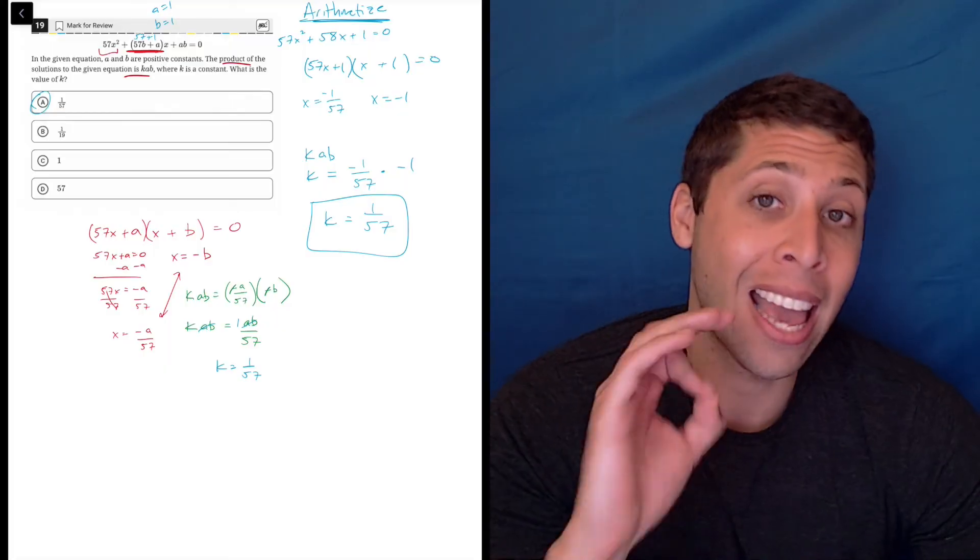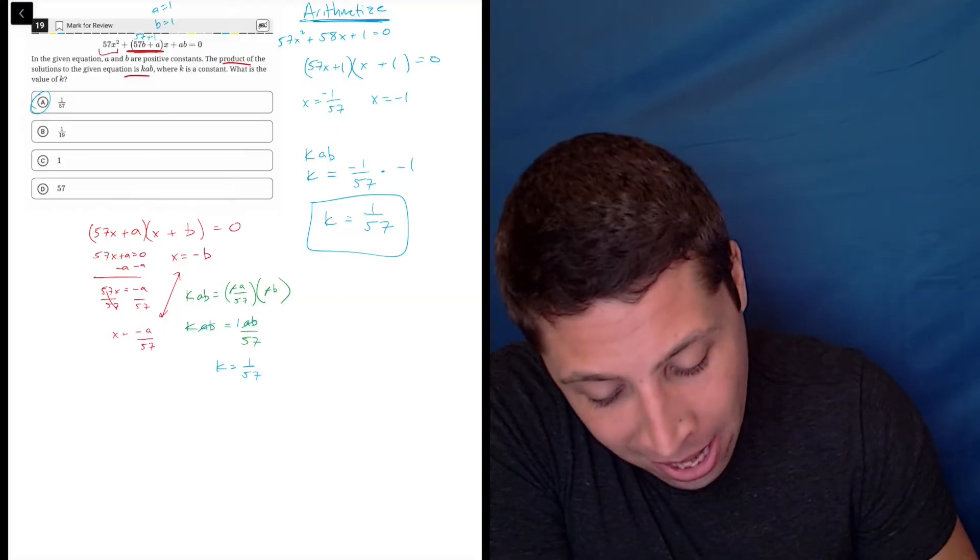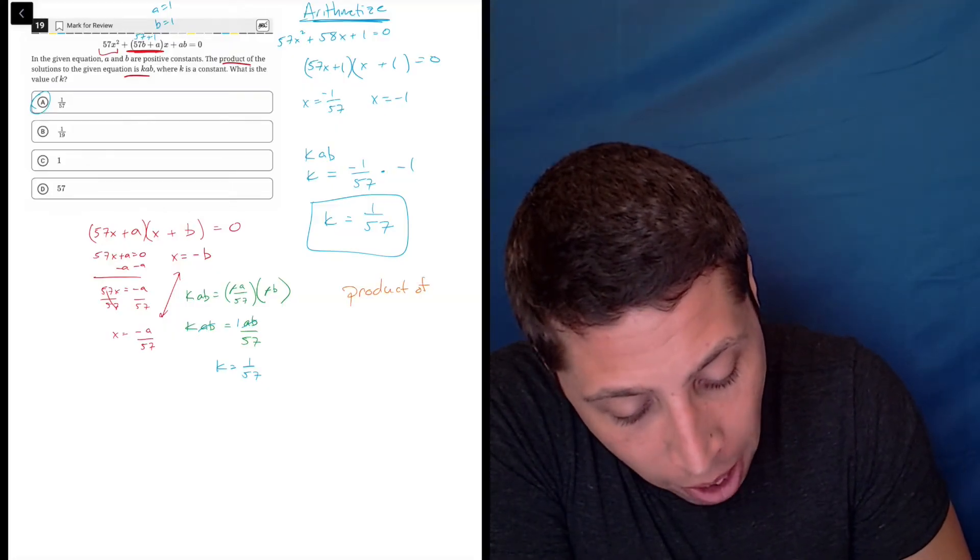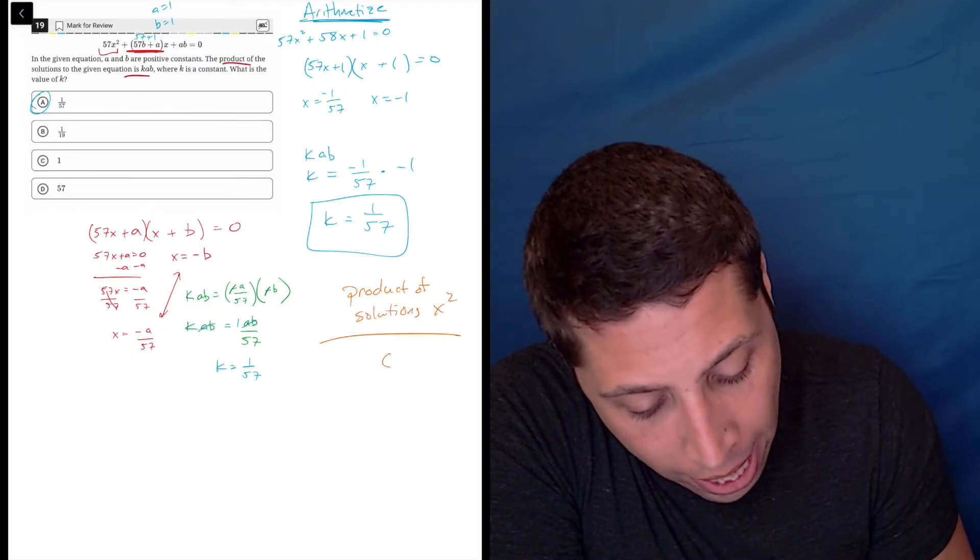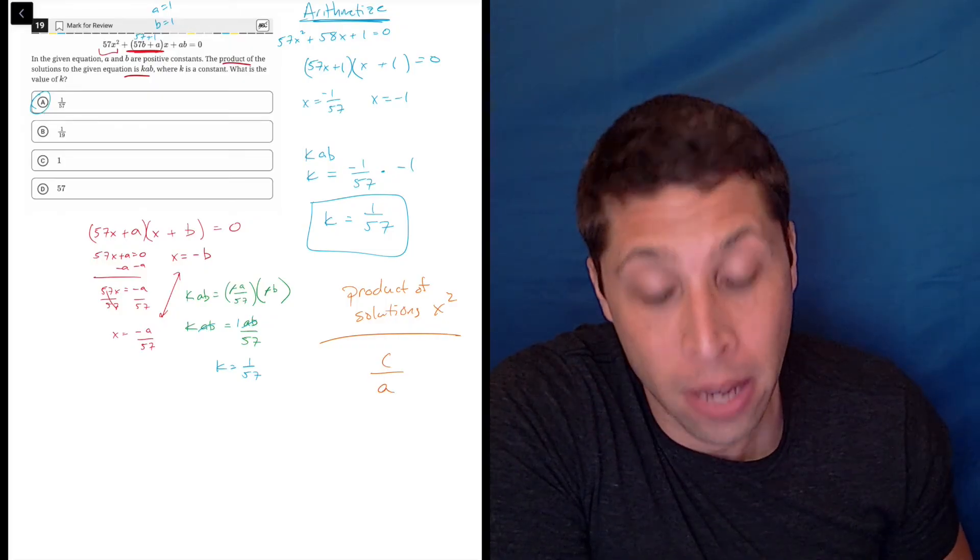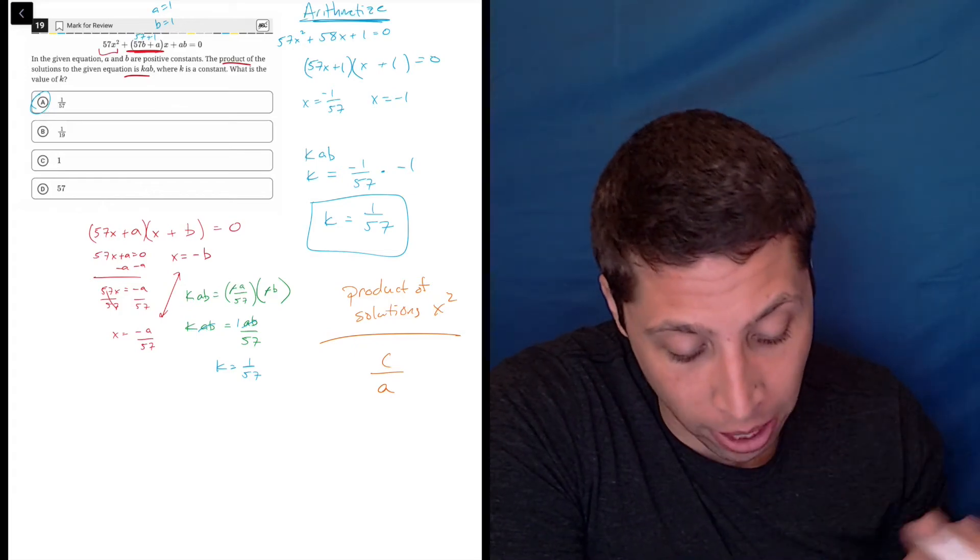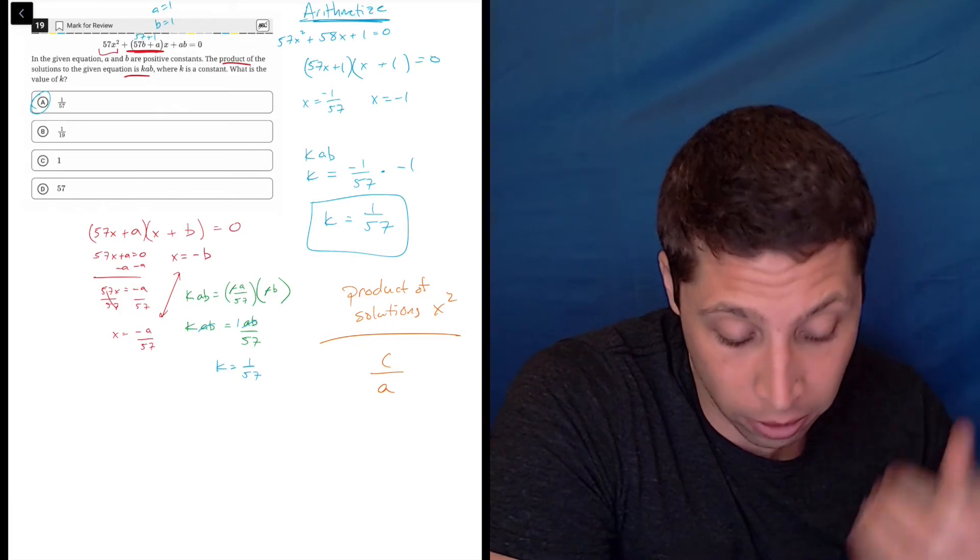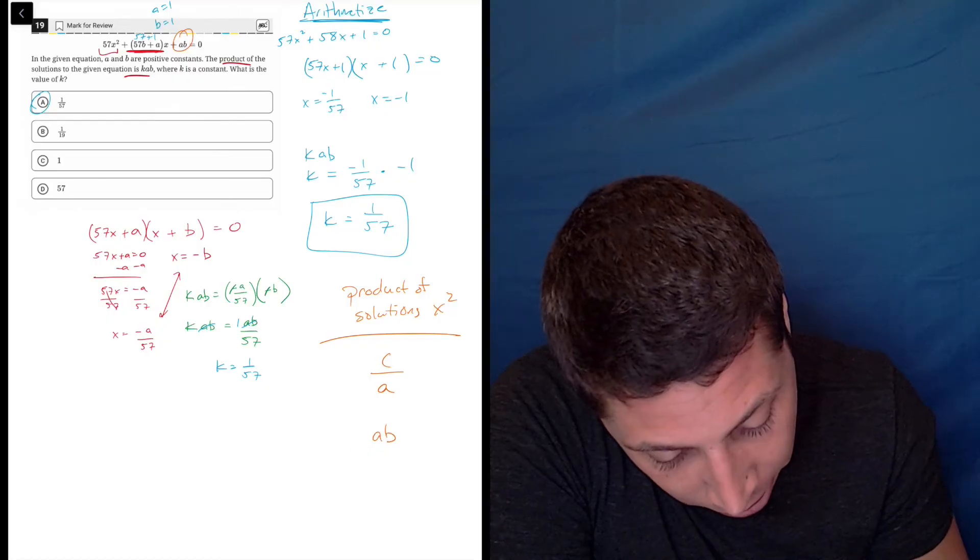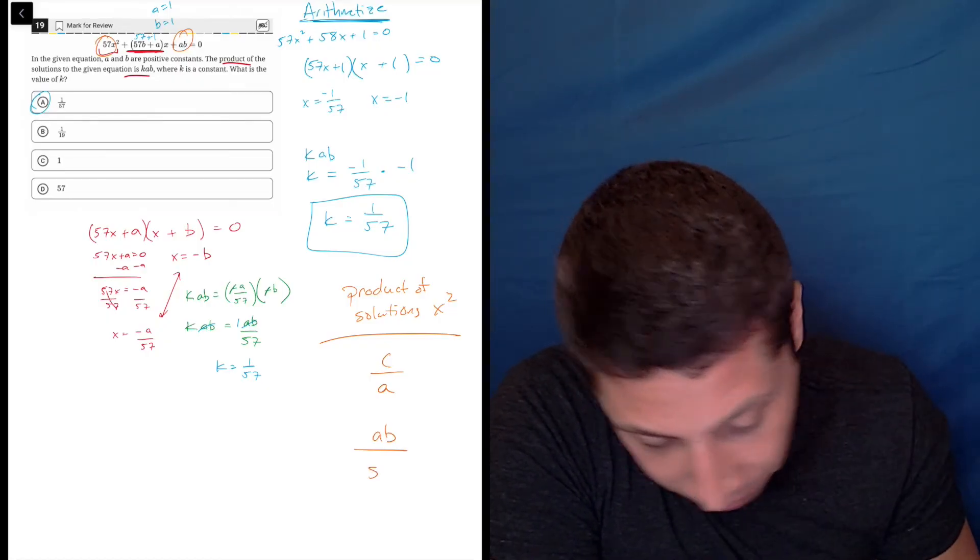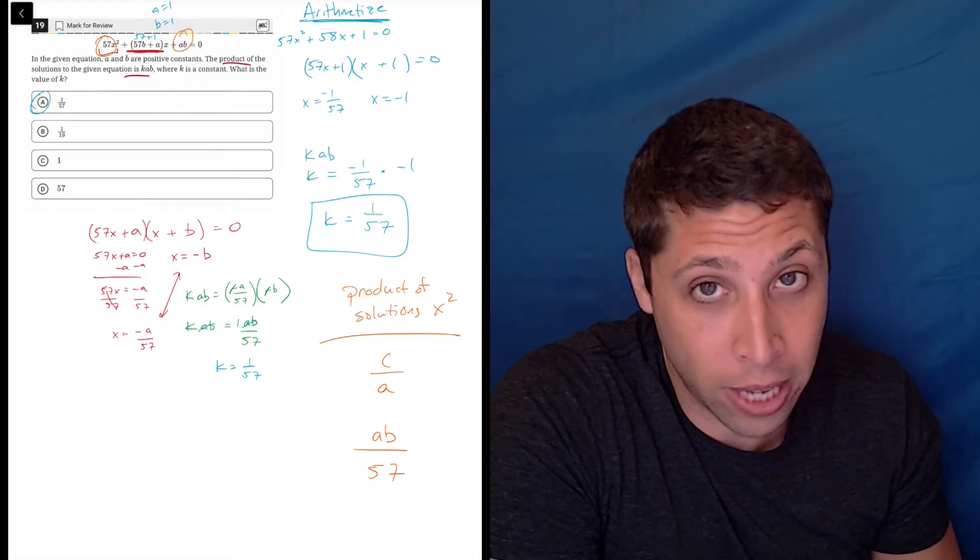We're going to use a formula that I have never, ever, ever used in any SAT question ever. Okay? It is a formula for the product of the solutions in a quadratic and it is c over a. So if we have our quadratic in a standard form, we can choose the c part and the a part and we can use them to figure this out. So in this case, the c term is this, the a over b. So I'll kind of just come down here, a over b. And the a part is 57, right? So that's the product of the solution. So there's no numbers for the a and b, but there you go. That's what it would be.